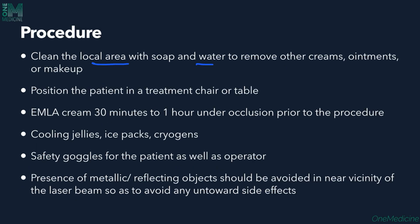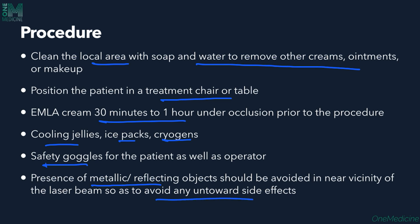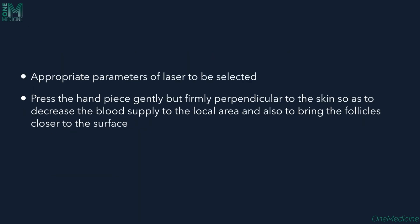An informed consent should be taken, and clinical photographs before and after treatment help check for efficacy. Shave the area a day prior to the procedure to avoid pain. For the procedure: clean the local area with soap and water to remove creams, ornaments, or makeup. Position the patient in the treatment chair or table. EMLA cream, the topical anesthetic, is applied 30 minutes to 1 hour under occlusion. Cooling jellies, ice packs, and cryogens need to be ready. Safety goggles for both the patient and operator are essential. Metallic or reflecting objects should be avoided near the laser beam. Press the handpiece gently and firmly perpendicularly to the skin to decrease blood supply to the local area and bring follicles closer to the skin surface.